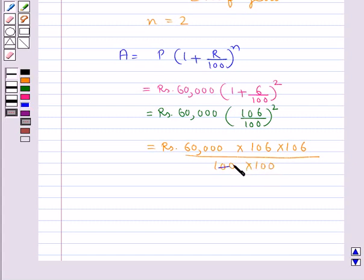Now, these 2 zeros get cancelled with these 2 zeros and these 2 zeros get cancelled with these 2 zeros. So, we have Rs. 6 multiplied by 106 multiplied by 106, which is equal to Rs. 67,416.